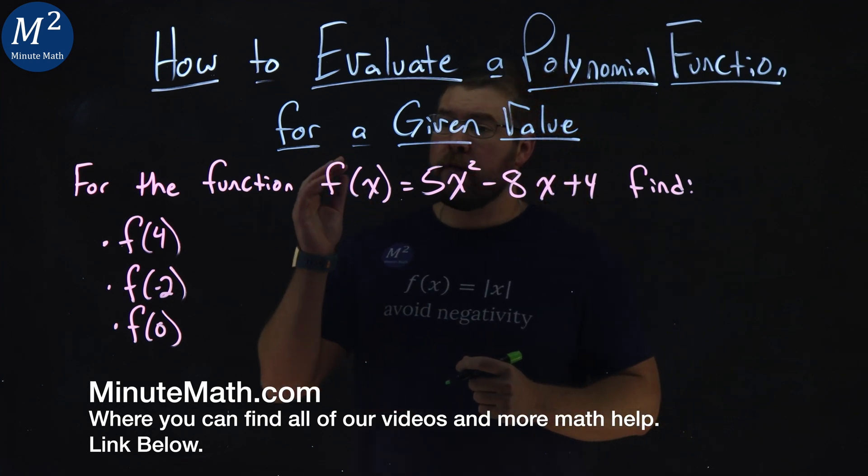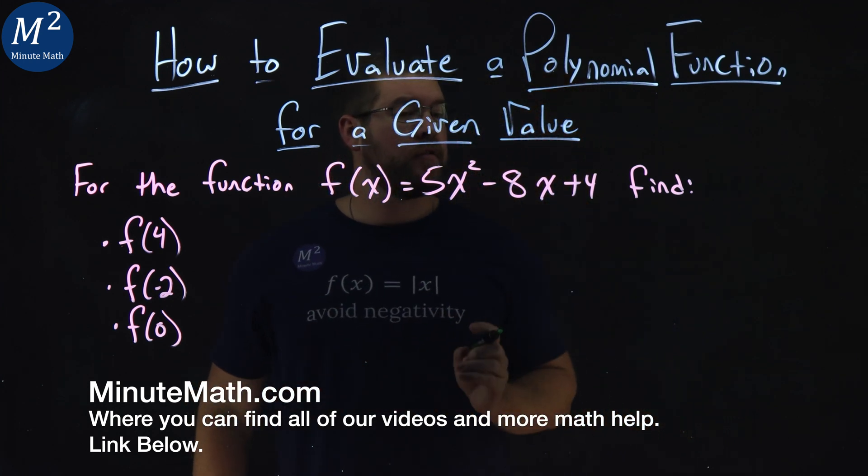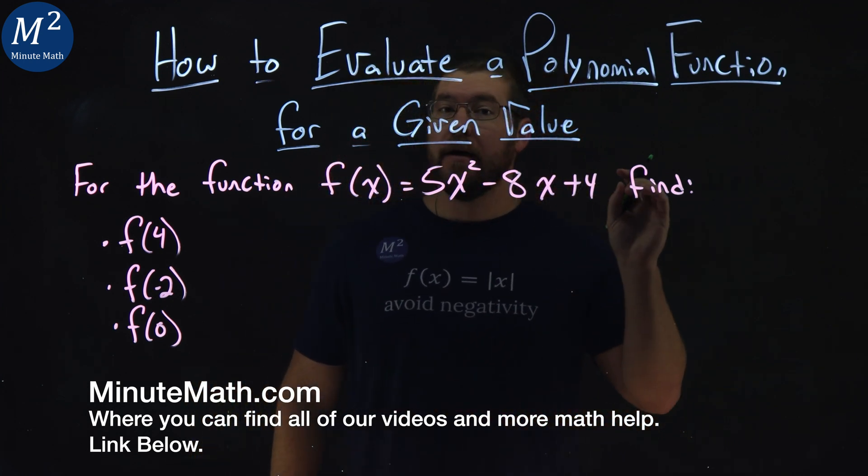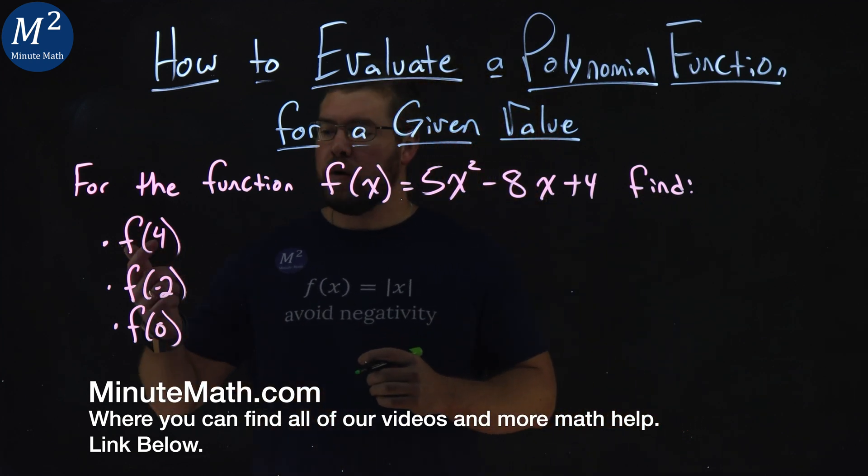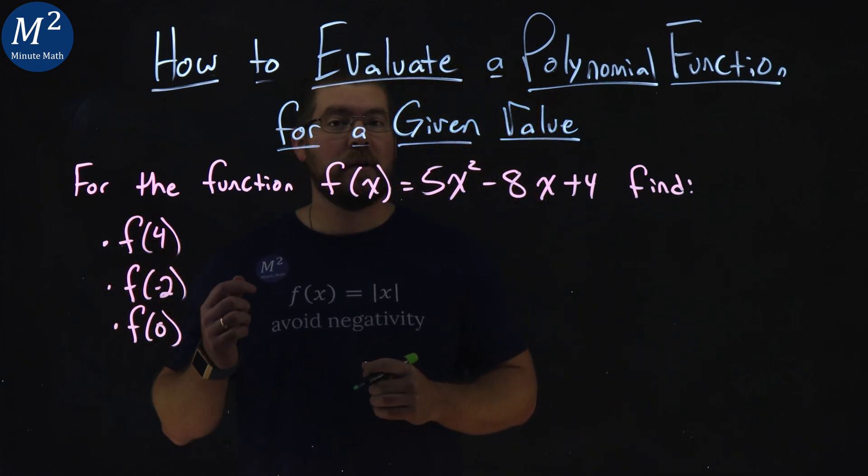We're given this problem right here. For the function f(x) = 5x² - 8x + 4, find f(4), f(-2), and f(0).